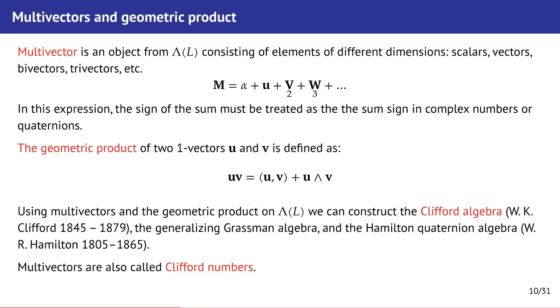Let us now introduce geometric algebra concepts. There are two main concepts: a multivector and geometric product. The main object here is a multivector. A multivector is a complex object. It consists of different p-vectors. The plus sign here should be preserved as in complex numbers and quaternions. The geometric product operation we define only for vectors.